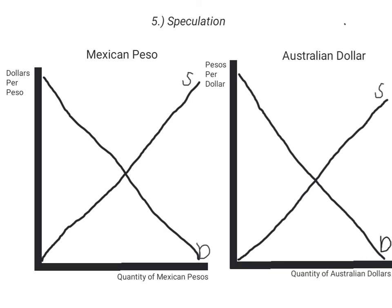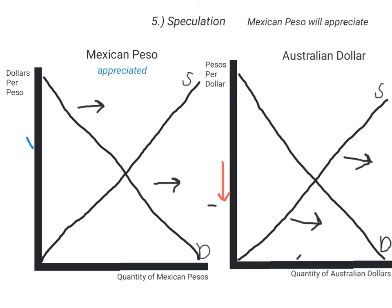Finally, the act of speculating — or buying and selling currency for a profit — can cause changes in the exchange rate. Let's say that speculators believe that the Mexican peso is going to appreciate relative to the Australian dollar. As speculators buy more pesos, this will increase the demand for the Mexican peso. The supply of the Australian dollar in the foreign exchange market will increase, as speculators exchange their Australian dollars for pesos. As you can see, the mere act of speculating that the Mexican peso will appreciate has caused it to appreciate, and this has had the added consequence of causing the Australian dollar to depreciate relative to the peso.